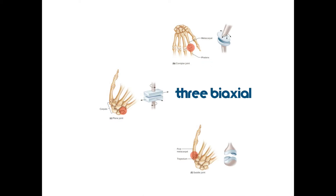Now let's move on to the condylar joint, and along with it the plane and saddle joints. These are the next in line along our synovial joints. Remember that synovial joints differ from cartilaginous or fibrous joints in that they allow more free movement. The ball and socket gives us the most flexibility, and now we're moving down to the next level of joints — the biaxial joints: condylar, plane, and saddle.